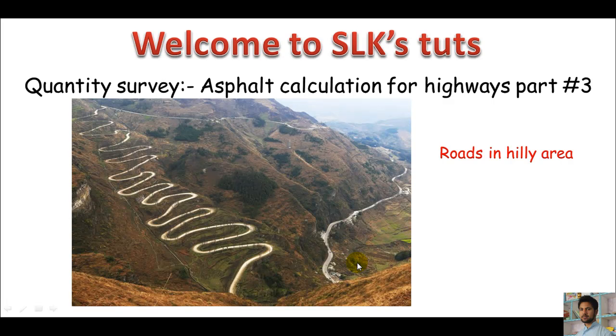You can clearly see the highway alignment is pretty good. Now here is a question: how can we calculate, as a quantity surveyor, the asphalt for this highway? I think for better understanding we must have a few examples as we do always.